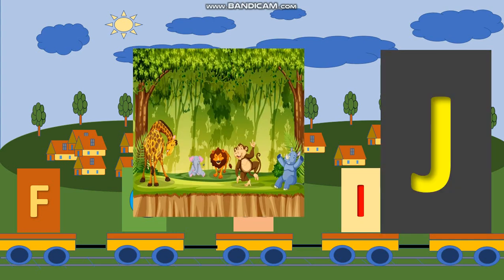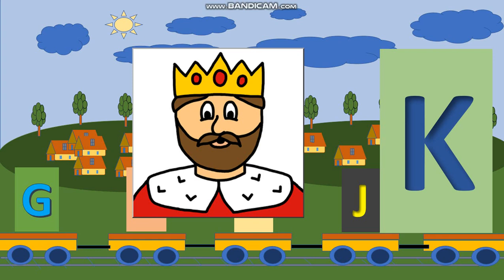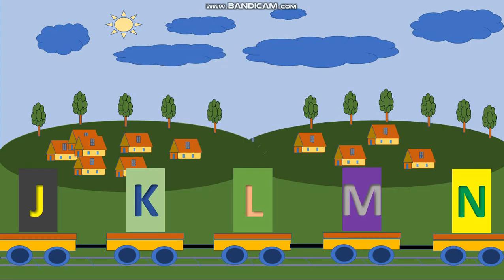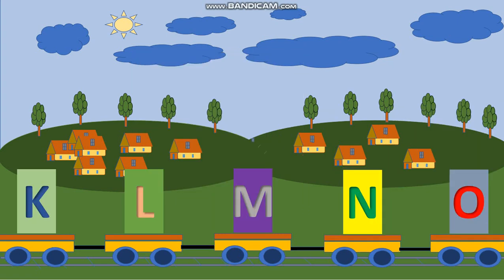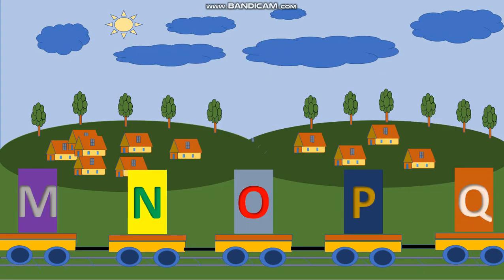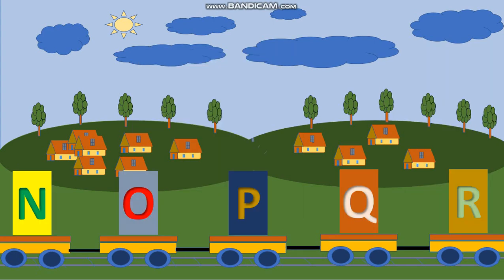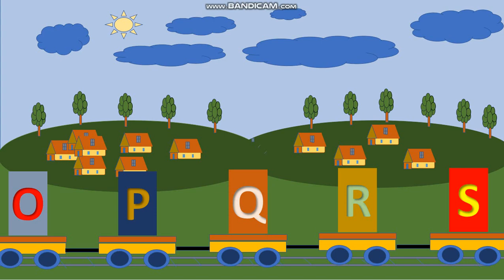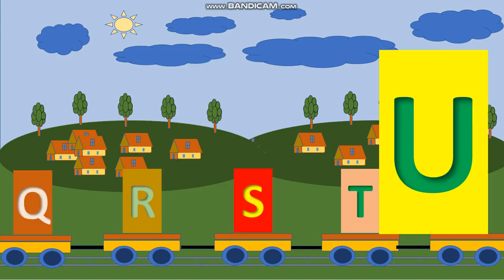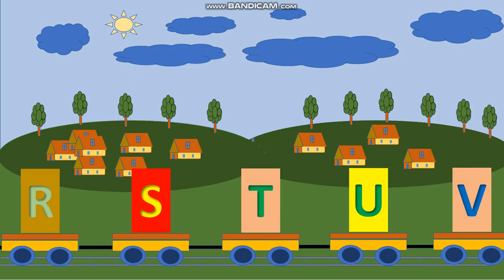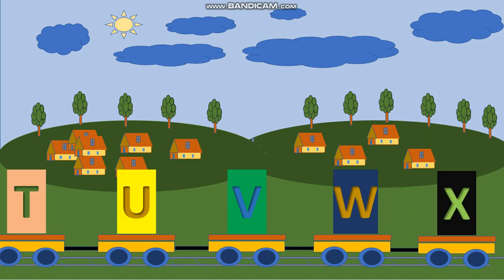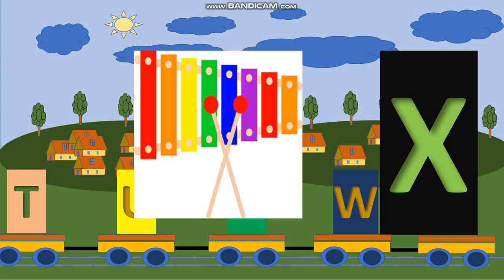J, J for jungle. K, K for king. L, L for lion. M, M for monkey. N, N for nest. O, O for octopus. P, P for parrot. Q, Q for queen. R, R for rabbit. S, S for star. T, T for tiger. U, U for umbrella. V, V for van. W, W for watch. X, X for xylophone. Y, Y for yak.